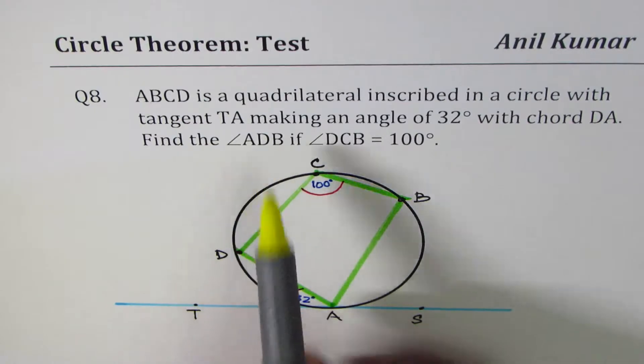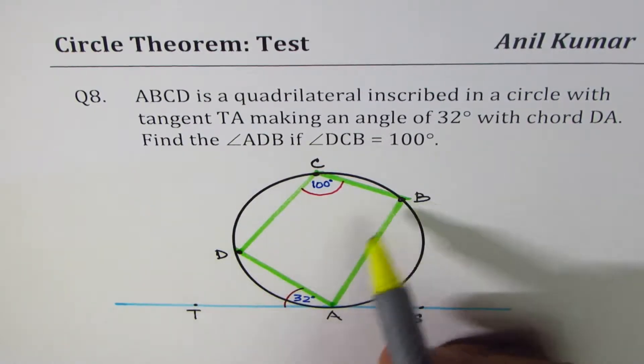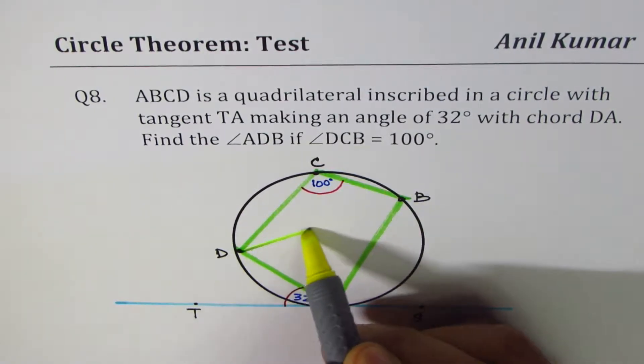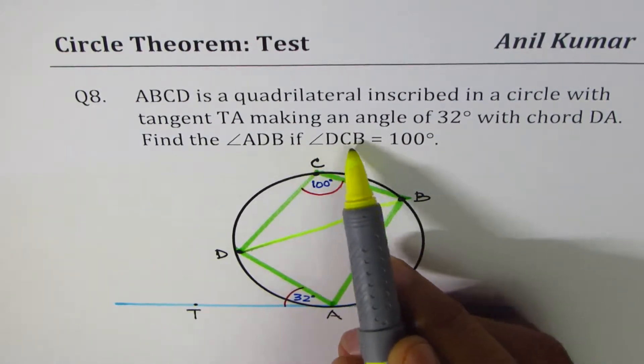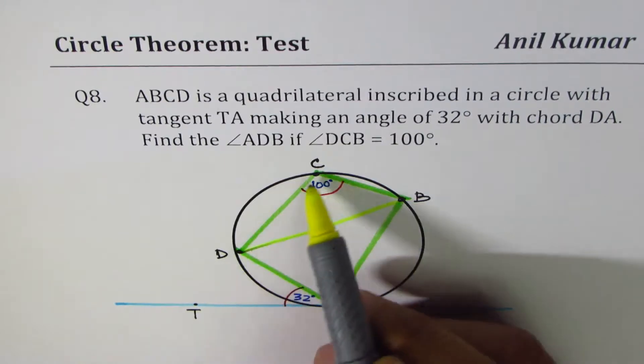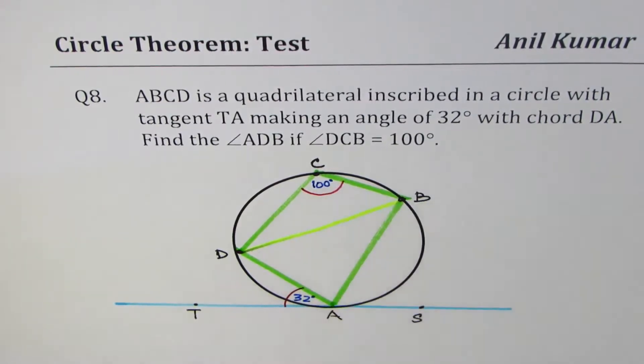Find the angle ADB, ADB. So let me just join D and B. ADB. If angle DCB is 100 degrees.